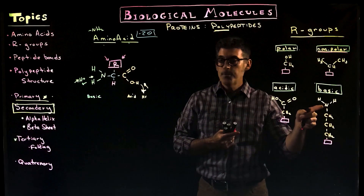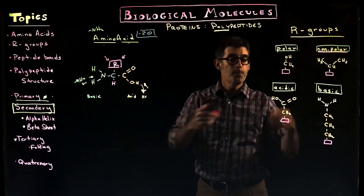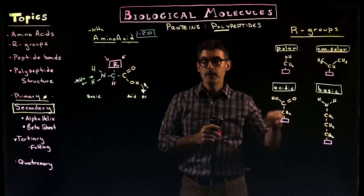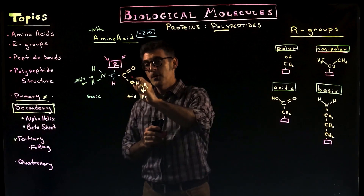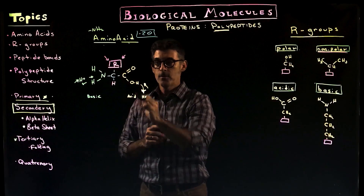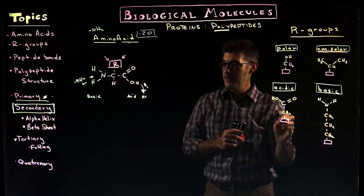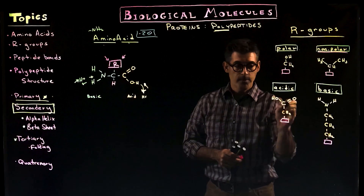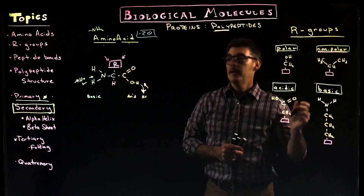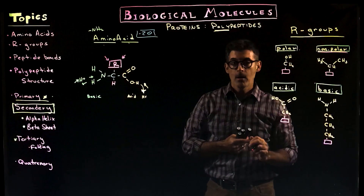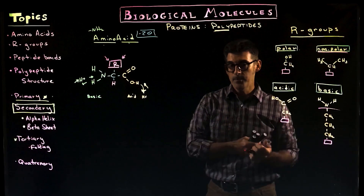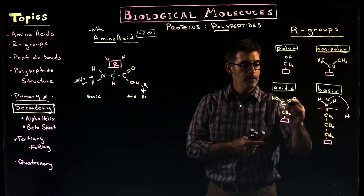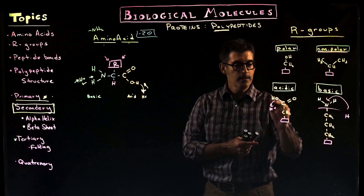Acidic and basic R groups are going to have extra carboxyl groups or amino groups within the R group. So if you have an acidic amino acid, you'll find a second carboxyl group as part of the R group, in addition to the one that's always present. For basic R groups, the amino part of the R group allows it to be basic — pulling in hydrogen ions — while an acidic one gives up hydrogen ions.